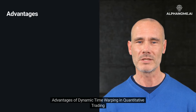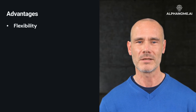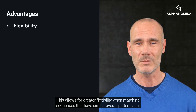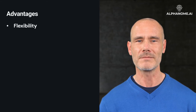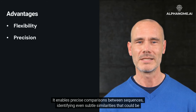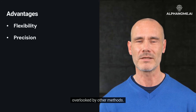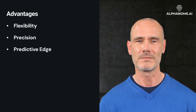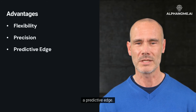DTW offers several advantages in quantitative trading. First, flexibility — DTW is not dependent on linear mapping, allowing for greater flexibility when matching sequences that have similar overall patterns but differ in certain sub-sequences. Second, precision — it enables precise comparisons between sequences, identifying even subtle similarities that could be overlooked by other methods. Third, predictive edge — with the ability to identify non-obvious correlations between assets, DTW can potentially offer traders a predictive edge.